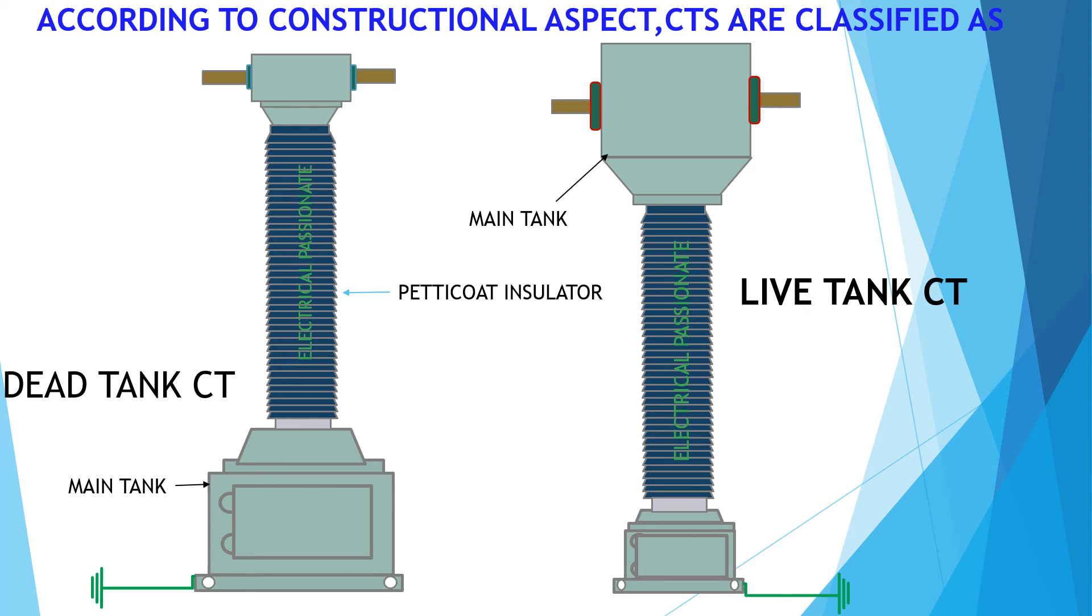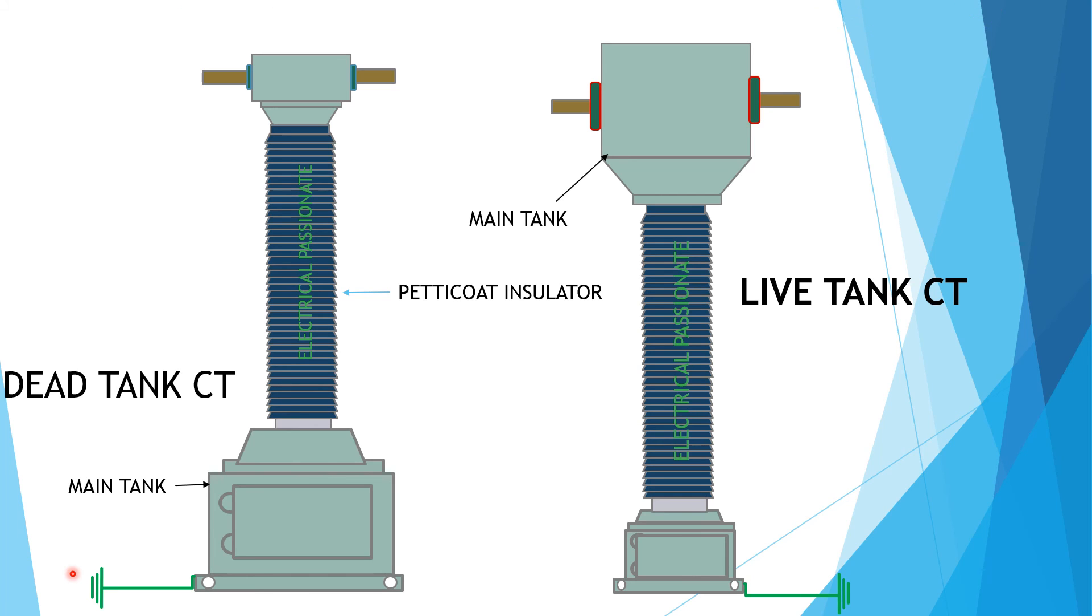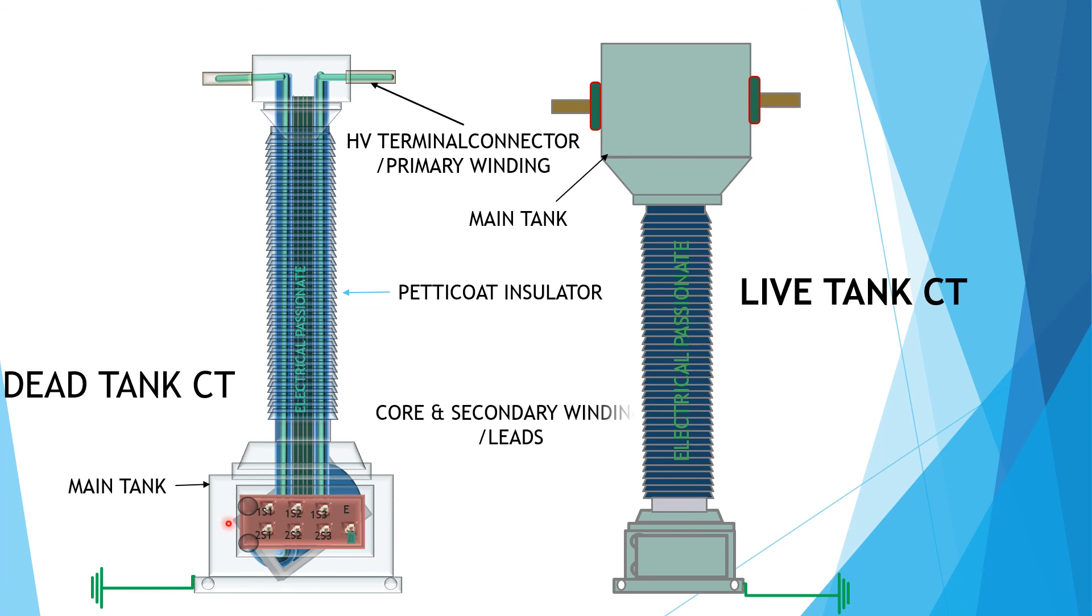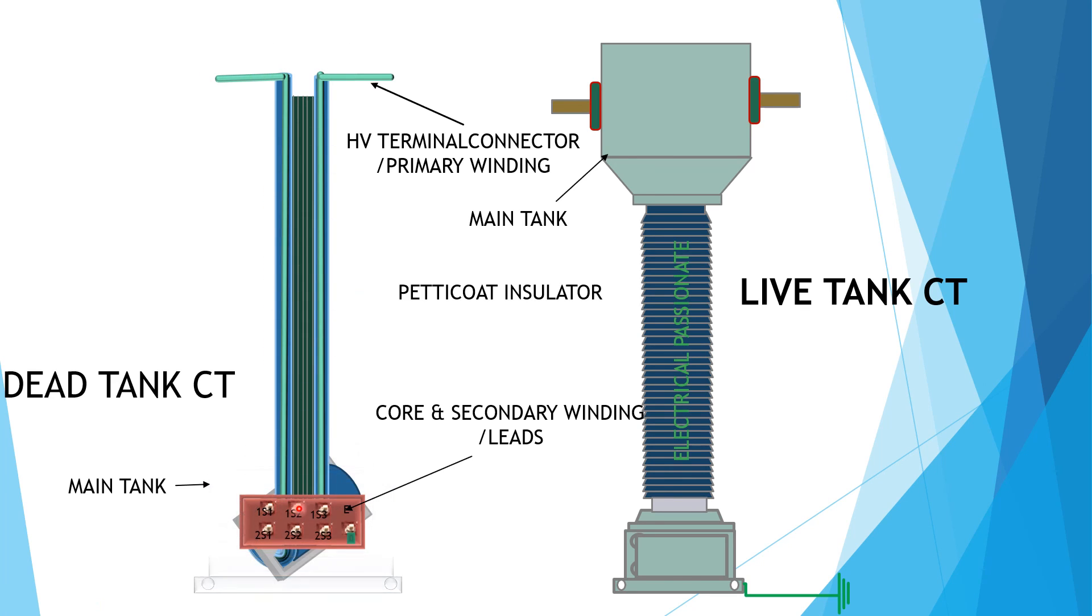If core and secondary windings of a CT are located at a tank insulated from earth potential, is called live tank CT. These are dead tank CT. Here core and secondary windings are located at this tank. The tanks are kept at earth potential. Primary HV terminals are insulated from the main tank by suitable insulated petticoat. Insulated primary winding is drawn at here.